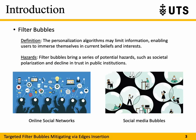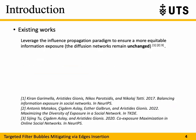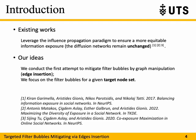To address the filter bubble phenomenon, existing works leverage the influence propagation paradigm to ensure more equitable information exposure — that is, the diffusion networks remain untouched. In this paper, we conduct the first attempt to mitigate filter bubbles by graph manipulation, specifically an edge insertion strategy. Additionally, we focus only on filter bubbles for a given target node set.